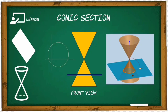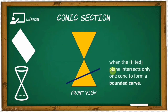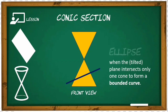Let's proceed to the next type. This is formed when a tilted plane intersects only one cone to form a bounded curve — we have what we call the ellipse. The ellipse and the circle are related to each other, because a circle is a special kind of ellipse.